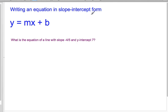Writing an equation in slope-intercept form. So we want our equation to look like y equals mx plus b. And if we're given the information here, what is the equation of a line with slope negative four-fifths and y-intercept of seven? Well, the y stays the same. The slope, we're going to plug that in for m. So negative four-fifths. The x stays as x. And then the y-intercept of seven is just the b there. So y equals negative four-fifths x plus seven.